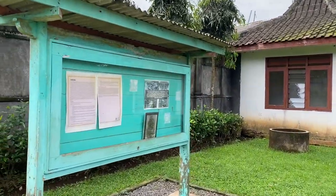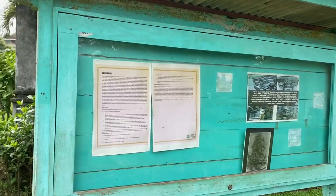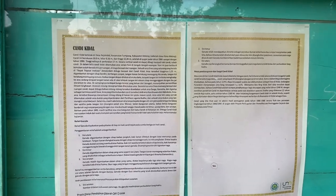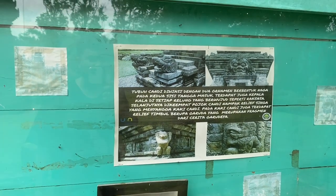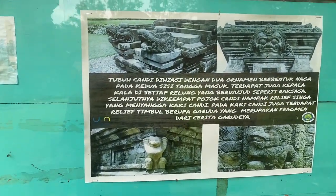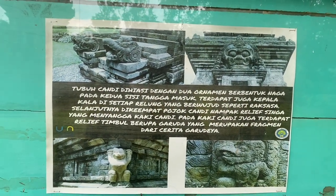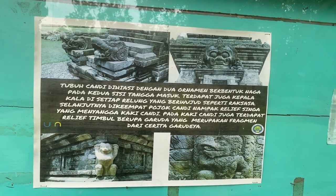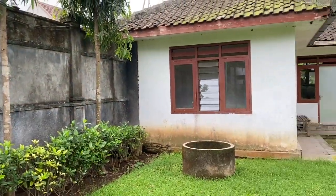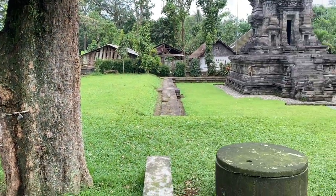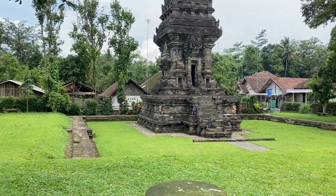Di depan ruangan, kita akan masuk untuk melihat bongkahan-bongkahan candi yang disimpan di dalam ruangan. Dan ini ada sekilas sejarah dari Candi Kidal. Ada tulisannya: tubuh candi dihiasi dengan dua ornamen berbentuk naga pada kedua sisi tangga masuk, dan terdapat juga kepala di setiap relung yang berada di candinya.